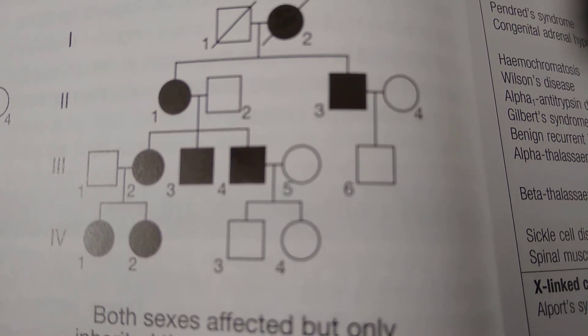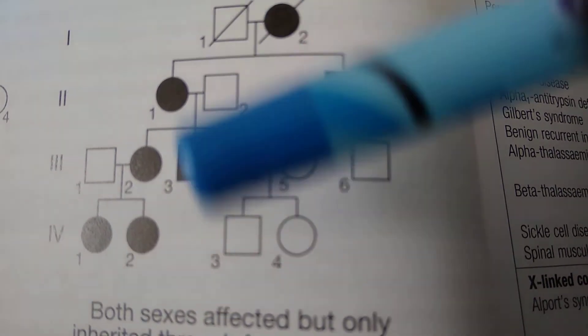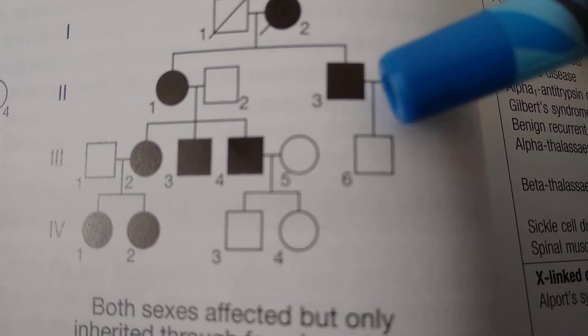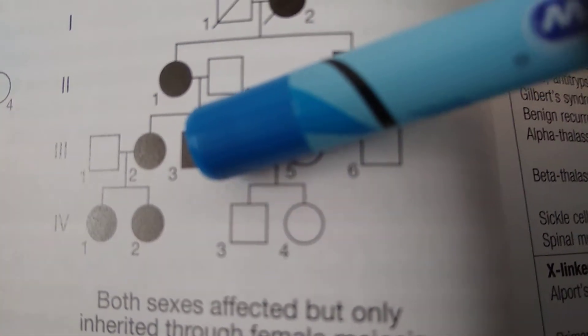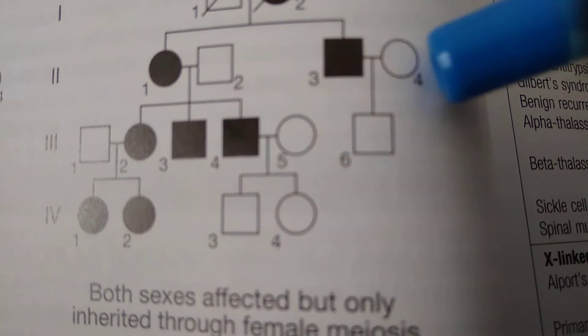Then this daughter's child is affected. All the three children of this daughter are affected. The male is not sending it that much. Again, this is a female. Female is giving it to both her daughters, but the male is not giving it.